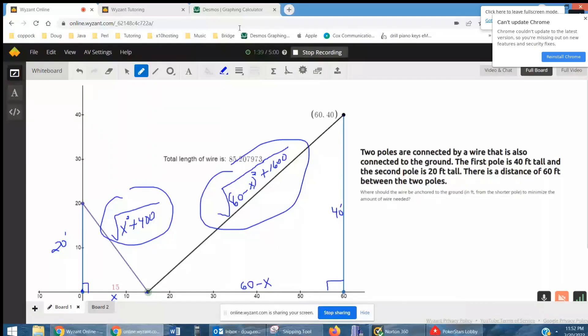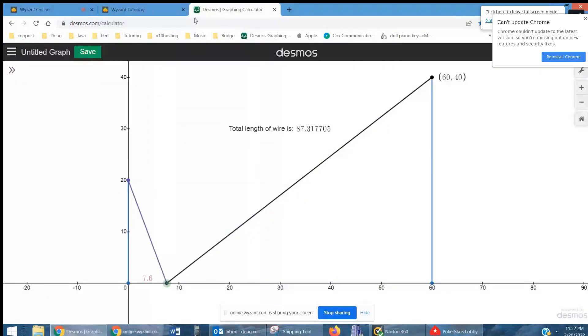Go to Desmos. Here's the depiction. You can see if I'm 7.6 feet away from the base of the short pole, the length of the wire is 87, and as I move this way the total wire seems to be getting shorter and shorter, so I get in the vicinity of 20.